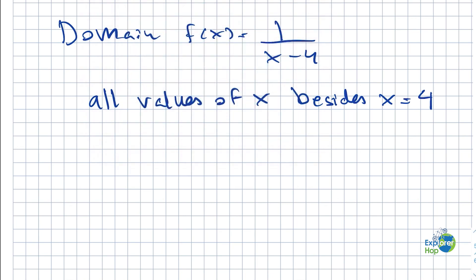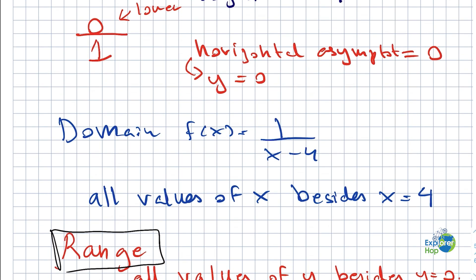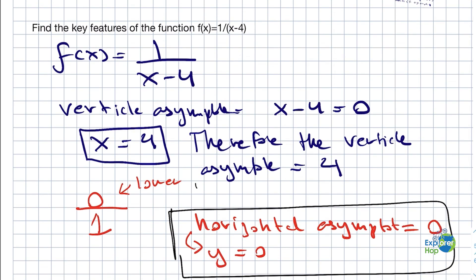Now we can do the same thing for the range. In the case of the range, we don't look at the vertical asymptote — rather we look at the horizontal asymptote, which in this case is 0. Therefore, the range is all values of y besides y equals to 0.